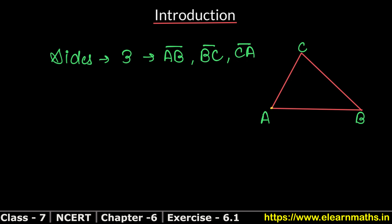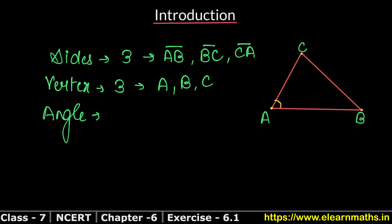A triangle also has three vertices, which are vertex A, vertex B, and vertex C. And there are three angles. How do we write an angle? If we have to specify the angle at A, we take the middle letter as A. So we can write angle CAB or angle BAC.